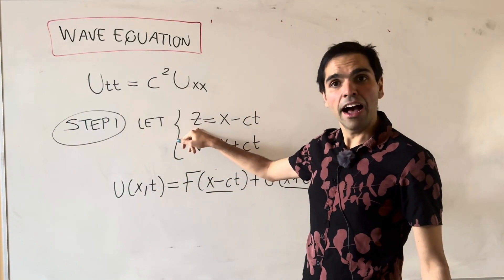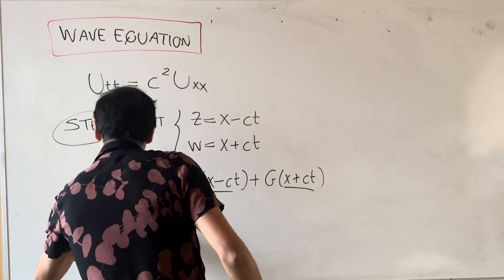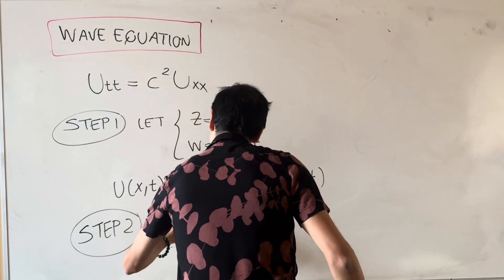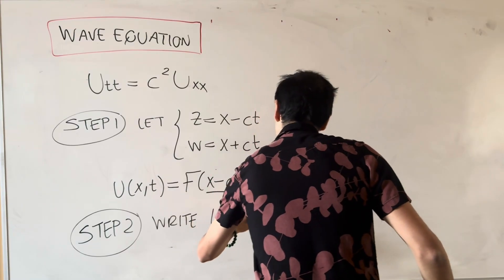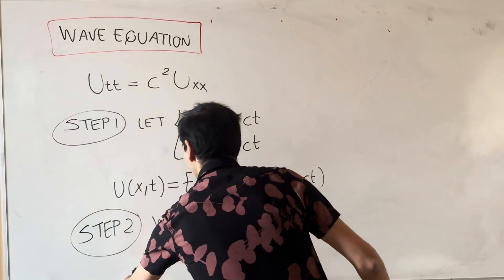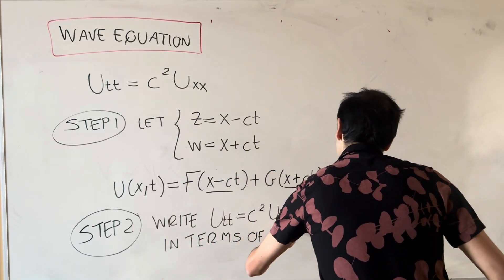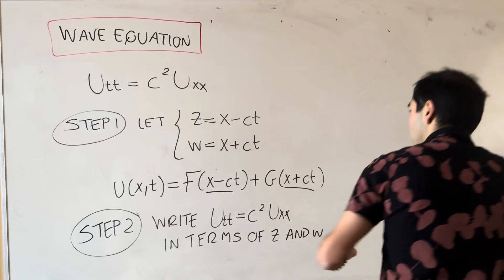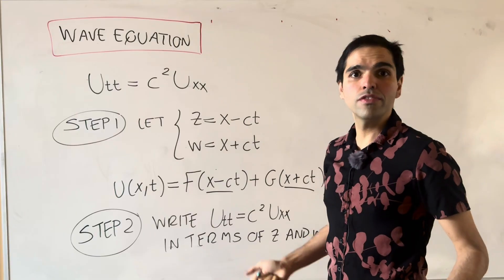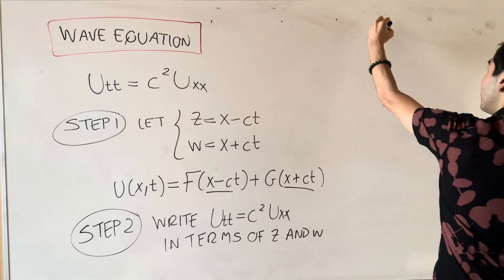Once we have our coordinates z and w, the next step now is to write our PDE U_tt equals c squared U_xx in terms of z and w. And in order to do this, we need to write all our partial derivatives in terms of z and w, and therefore use the chain rule.